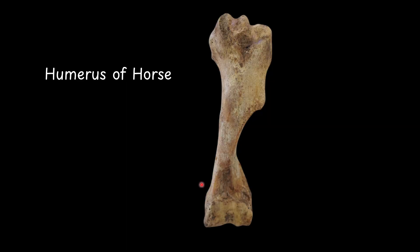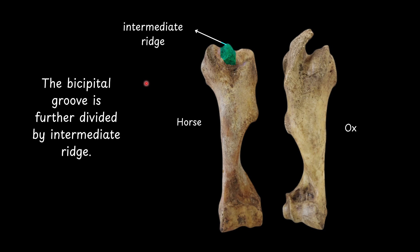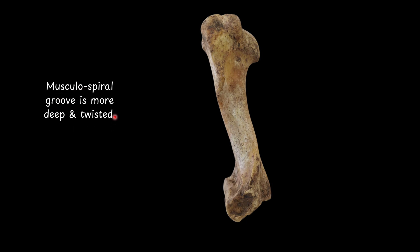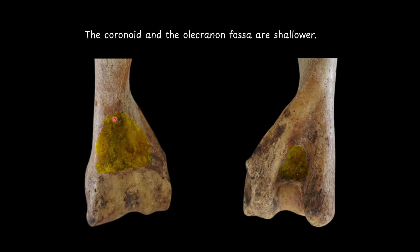Species difference — humerus of the horse: the deltoid tuberosity is very prominent. The bicipital groove is further divided by an intermediate ridge. The musculospiral groove is more deep and twisted. The summit is not ragged and does not overhang the bicipital groove. The coronoid fossa and olecranon fossa are shallower. The nutrient foramen is found at the distal third of the medial surface.